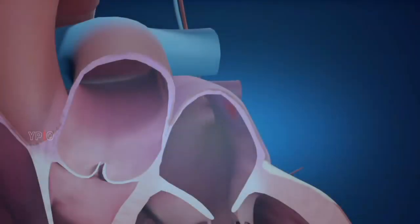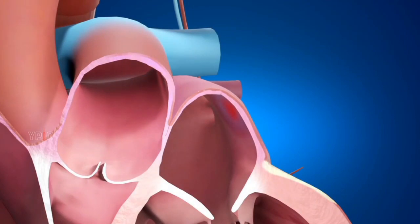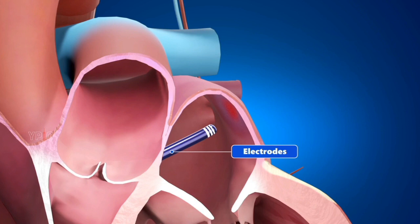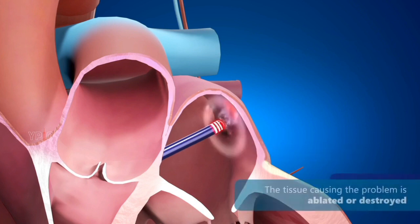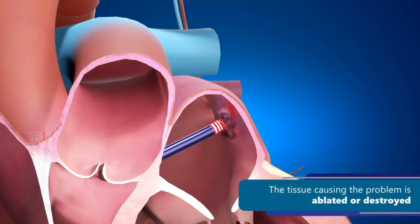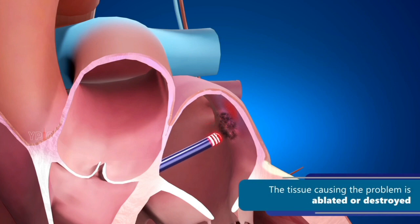During cardiac ablation, small wires called electrodes are inserted within your heart through a blood vessel to evaluate your heart's electrical activity. When the root of the problem is discovered, the tissue causing the problem is ablated or destroyed.